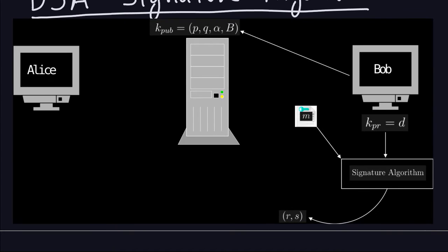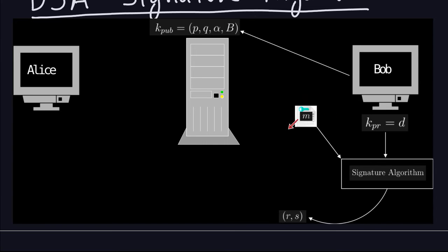Remember the setup: Bob publishes the public key which is P, Q, Alpha, and B. Those are the prime numbers, Alpha is the generator, and B is Alpha to the private key. The private key is just the number D. The signature algorithm always takes as input the private key and the message, and for the DSA it produces a pair of numbers R and S, which is the signature corresponding to that message.